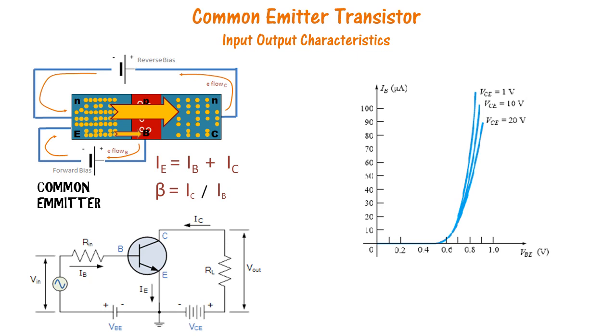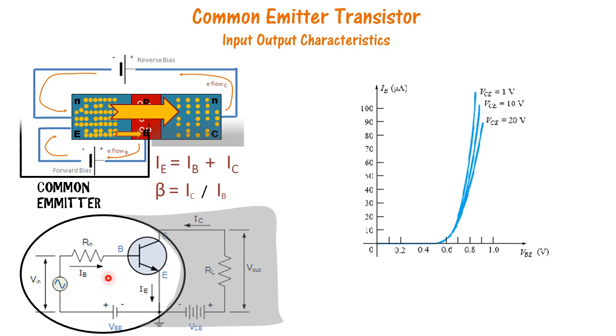We will first focus on the input characteristics, and that is the change in base current versus change in the base-emitter voltage. We know that the depletion layer across this PN junction is about 0.6 volts. So what we notice is that when we increase the base-emitter voltage from 0 to about 0.6 volts,